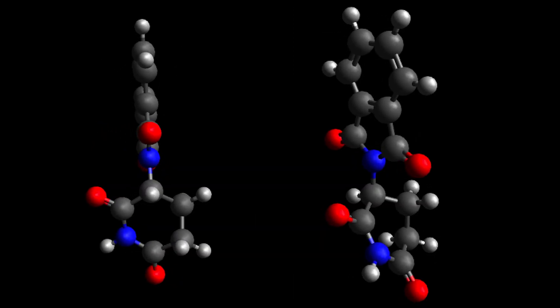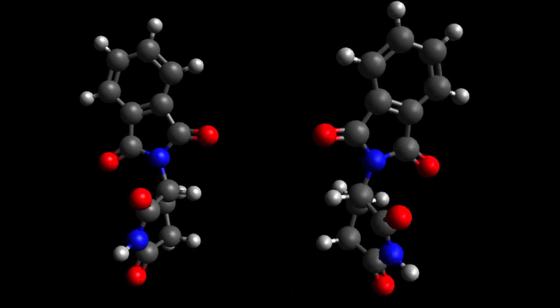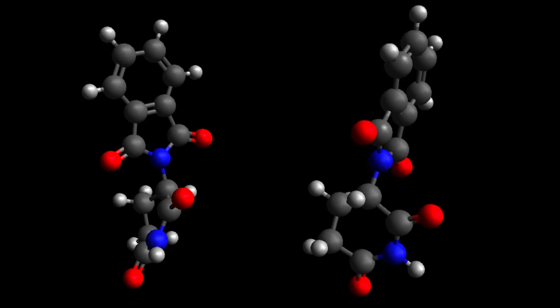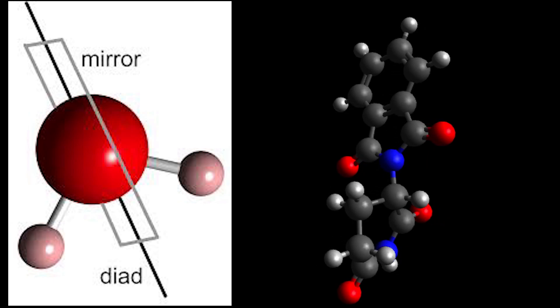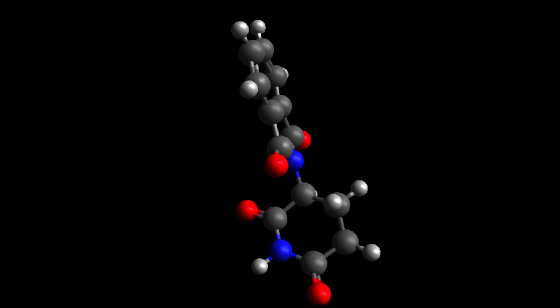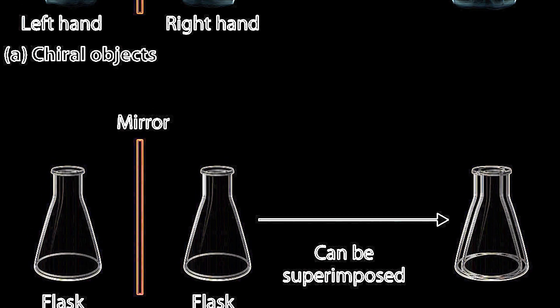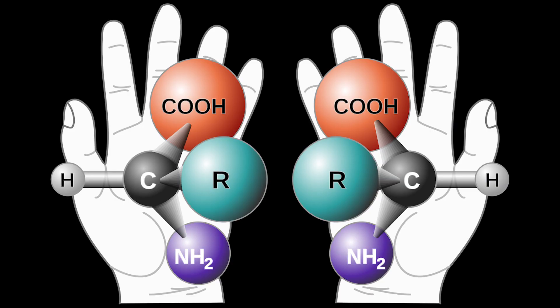An object or a system is chiral if it is distinguishable or different somehow from its mirror image — that is, it cannot be superimposed onto it. Conversely, a mirror image of an achiral object, such as a sphere, cannot be distinguished from the object. A chiral object and its mirror image are called enantiomorphs, from the Greek word meaning opposite forms. When referring to molecules, they're referred to as enantiomers.